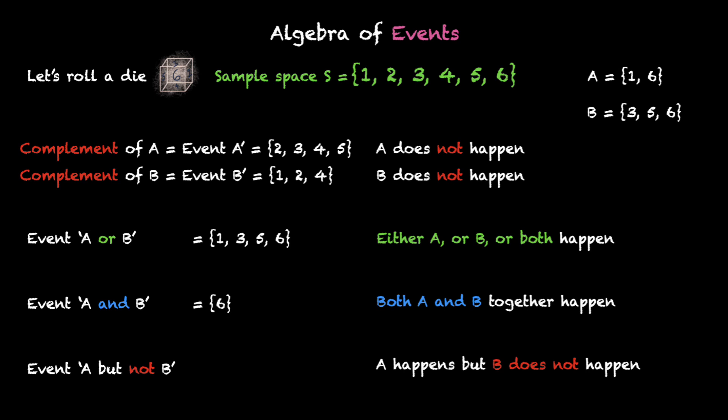For A and B, we only have element {6} because that's the only element common in both A and B. Both A and B can together happen only when we get a 6. If we get a 1, we'll have event A happening but not B. If we get a 5, we'll have event B happening but not A. For A but not B, A has happened but B does not happen. Since A requires {1 or 6} but 6 also triggers B, we remove 6 and are left with {1}. You start with elements of A and remove the elements common in both A and B.